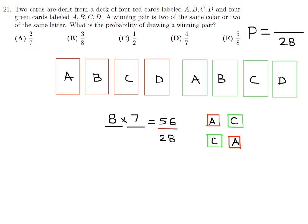Now we have to figure out the numerator — the number of winning pairs. A winning pair is achieved when you have two of the same color or two of the same letter. Same letter is the easier case: that's just A-A, B-B, C-C, or D-D — a red card and a green card of the same letter. That gives us four possible winners.